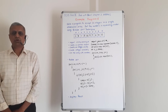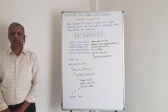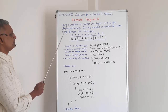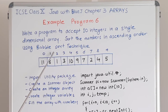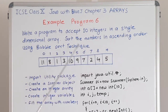Let us look at one more programming example in Java. Write a program to accept 10 integers in a single dimensional array and sort the numbers in ascending order using bubble sort technique. You should recall what bubble sort is — I have explained it in a previous video, but I will explain it briefly here.